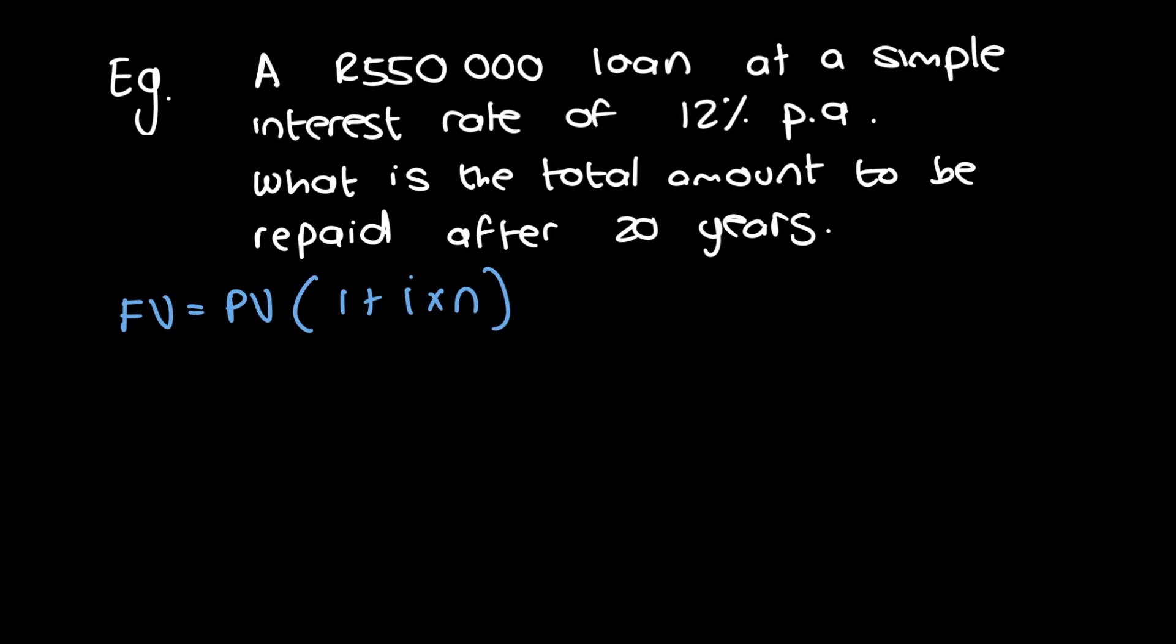We can just plug and play kind of situation. Now we need to check if what we're plugging in is in the correct units. So first up, we have a R550,000 loan. So that is the present value, right? And we can say, okay, the present value is equal to 550,000.